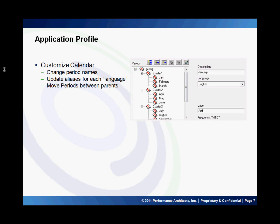In the next and final step you customize your calendar where you can specify the labels for each of your periods. You can edit the labels for each of your periods as well as give them a description for each of the languages described. You can also move your periods around — for example, if you decide that quarter one should have four months rather than three, you can do it here.